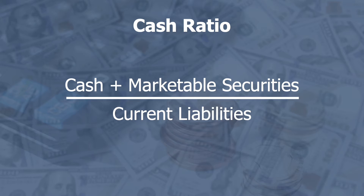Finally, we'll take a look at the cash ratio. As it sounds, this is literally just taking the cash and cash equivalents — the most liquid assets we can possibly get — so this is cash that's already there or we can get our hands on really fast. This is simply the cash or cash equivalents plus the marketable securities divided by the current liabilities.